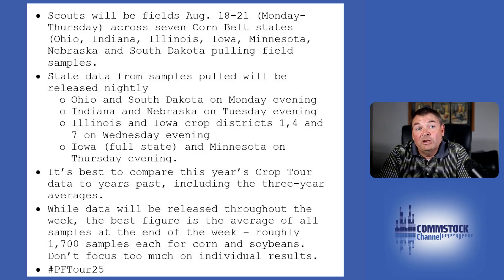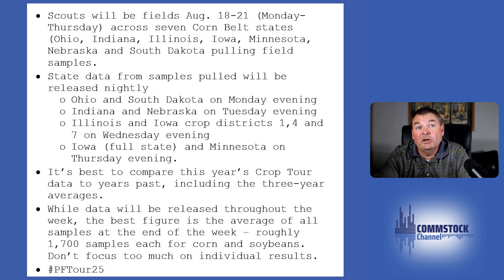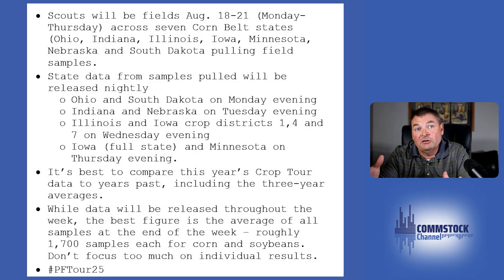While there will be data released throughout the week, it's important that you not get too focused on individual stops. Keep in mind that these are individual samples from one spot in each field. Over the course of the week, there will be roughly 1,600 to 1,700 corn samples pulled and the same number of soybean samples. The best number at the end of the week is always the average of that total conglomerate — one big cornfield and one big soybean field from western Ohio all the way through Nebraska.